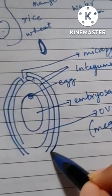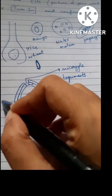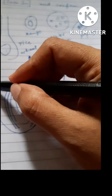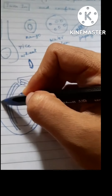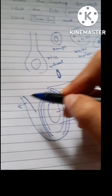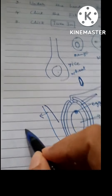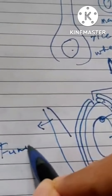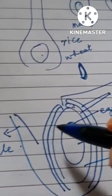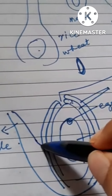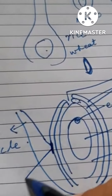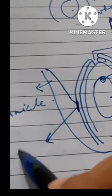The whole ovule is connected to the wall of the ovary by a stalk. This stalk is called the funicle. The point of attachment of the funicle with the ovule is called the hilum.